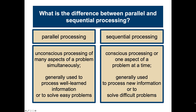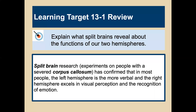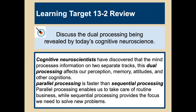Returning to our learning targets: split brain research on people with a severed corpus callosum has confirmed that in most people the left hemisphere is more verbal, while the right hemisphere excels in visual perception and the recognition of emotion. Cognitive neuroscientists have discovered that the mind processes information on two separate tracks — dual processing — affecting our perception, memory, attitudes, and cognition. Parallel processing handles routine business, while sequential processing provides the focus needed to solve new problems. That's it for module number 13 — thank you!